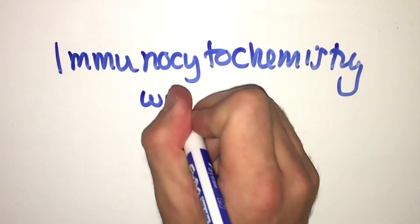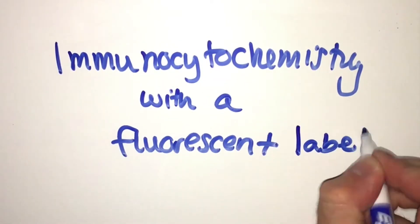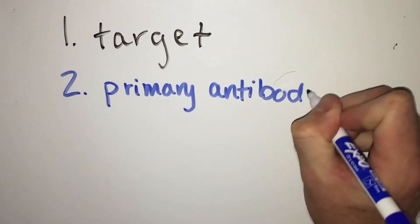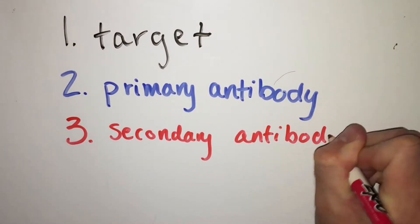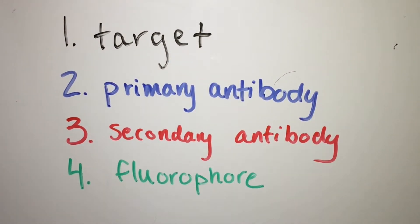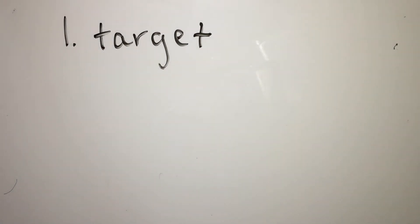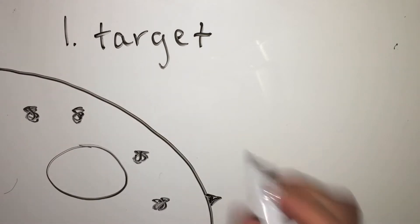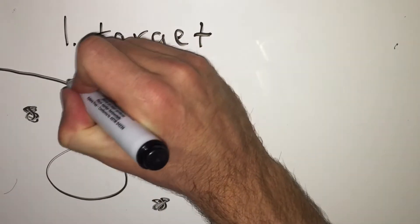In this video, we will specifically discuss immunocytochemistry with fluorescent labels, as this is a very common way that biologists utilize this technique. In a fluorescent immunocytochemistry experiment, there are four components: the target, the primary antibody, the secondary antibody, and the fluorophore. The target of interest is the thing you want to visualize. This may be a specific transcription factor, a tumor marker, or an enzyme. It may be within a cell, or it may be expressed on the surface of the cell.